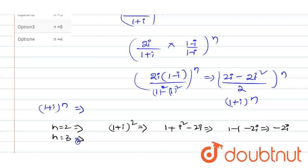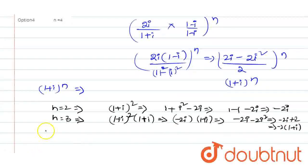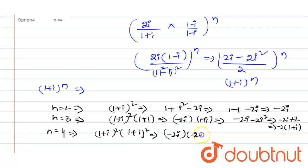For n=3: (1+i)³ = (1+i)² × (1+i) = 2i × (1+i) = 2i + 2i² = 2i - 2 = -2 + 2i, which is not positive. For n=4: (1+i)⁴ = (2i)² = -4i² = -4×(-1) = 4. But this gives -4, a negative value, so we need a positive value.